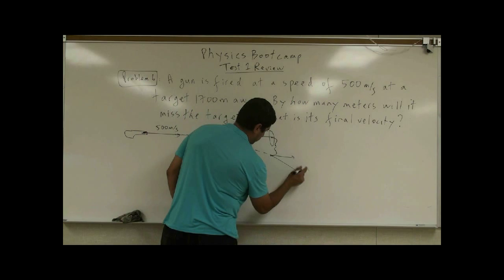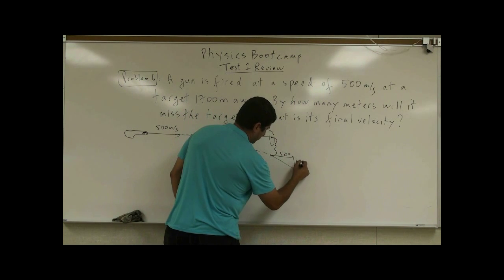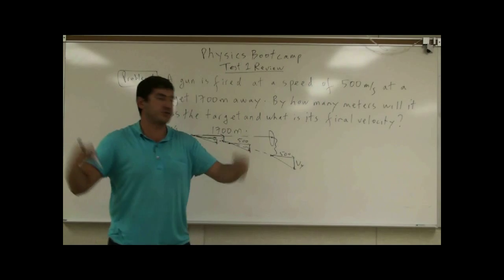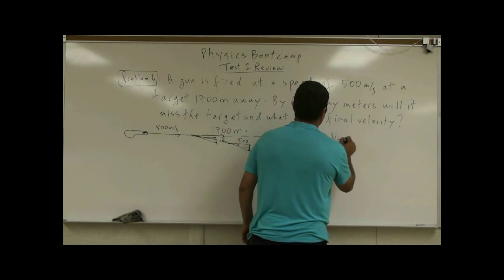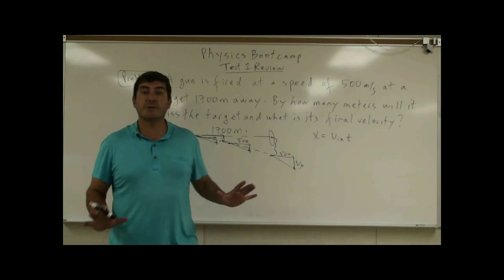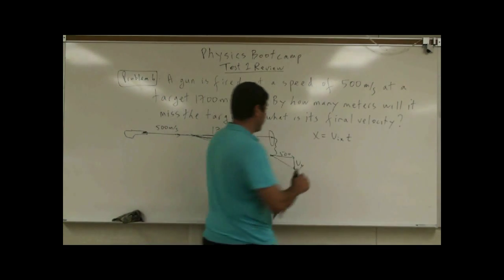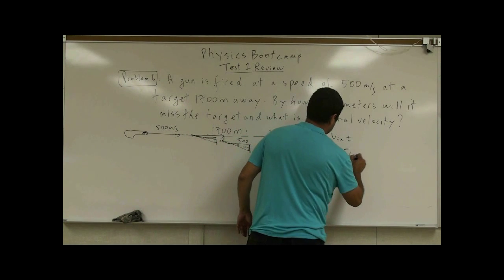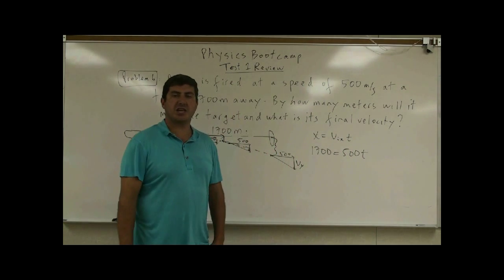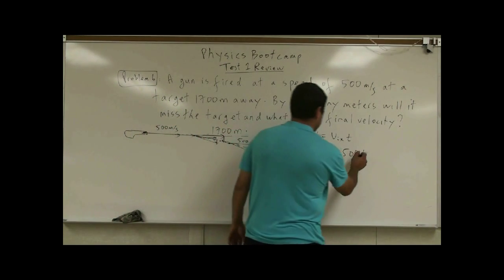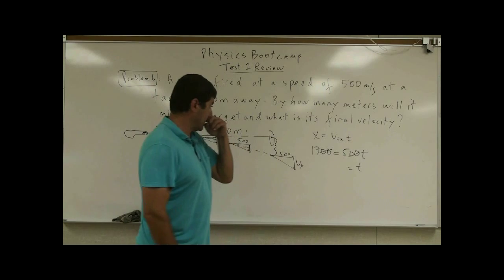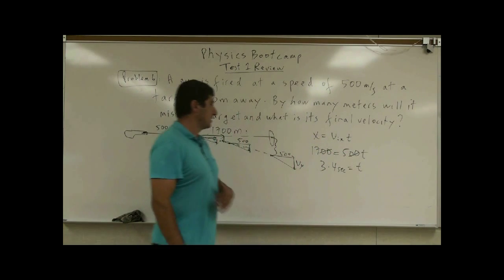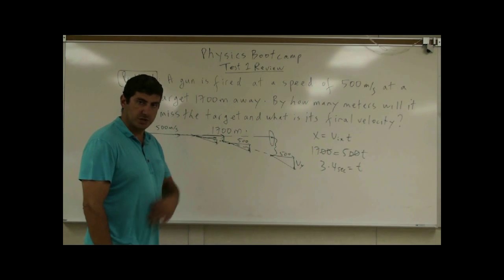By the time it gets to the target, the X velocity is still 500 and the Y velocity has increased. The horizontal distance it's going is 1700 meters. So X equals V-initial-X times T: 1700 equals 500 times T. There's no acceleration in the X direction if we ignore air friction. So T equals 1700 divided by 500, which is 3.4 seconds. In 3.4 seconds the bullet will be there.